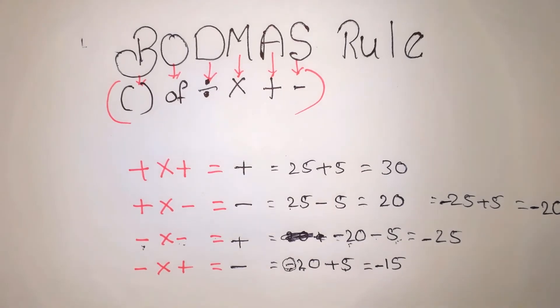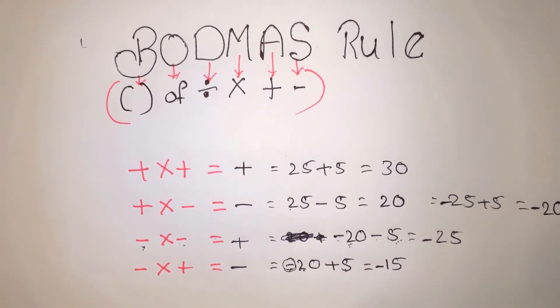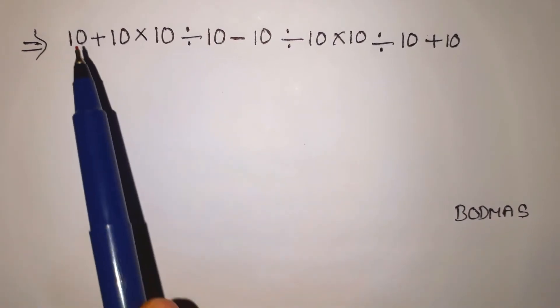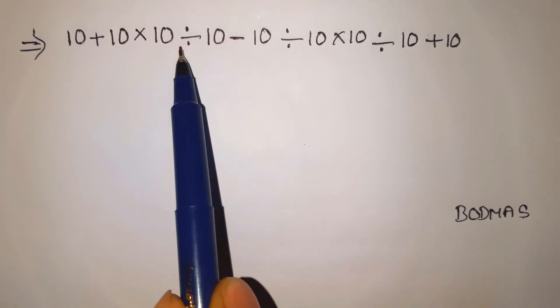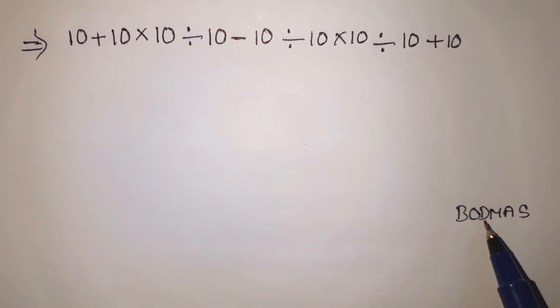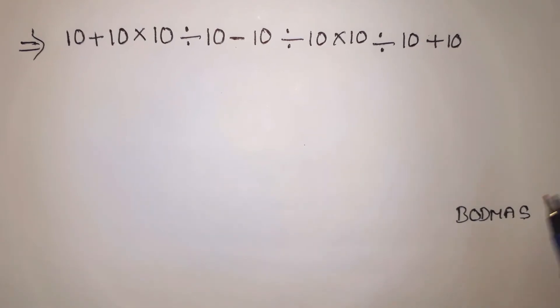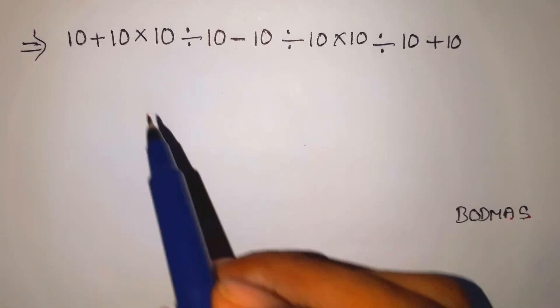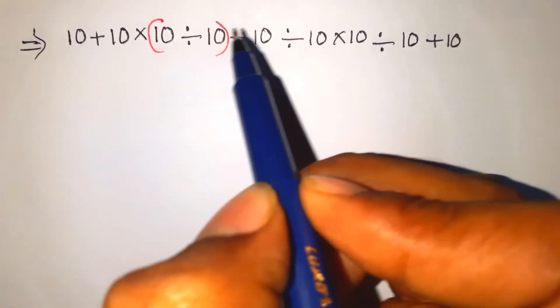Now let's start the problem. Friends, we have this problem: 10 plus 10 into 10 divided by 10 minus 10 divided by 10 into 10 divided by 10 plus 10. If we first do this problem using BODMAS, it will be very simple. First, bracket off. Now, first we choose division, next multiplication, next addition, next subtraction.